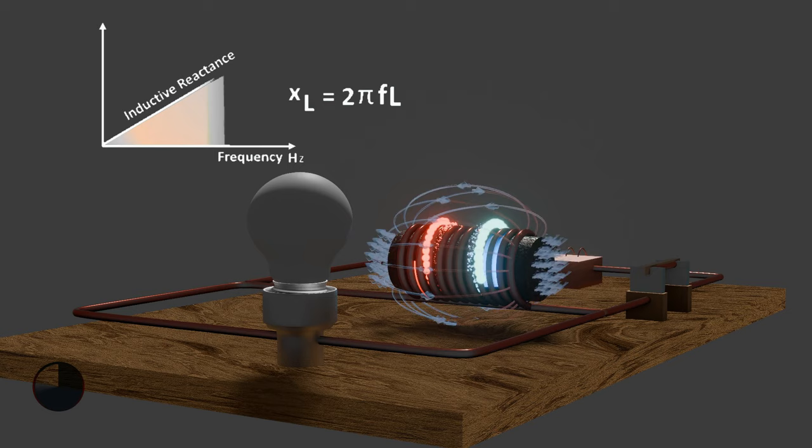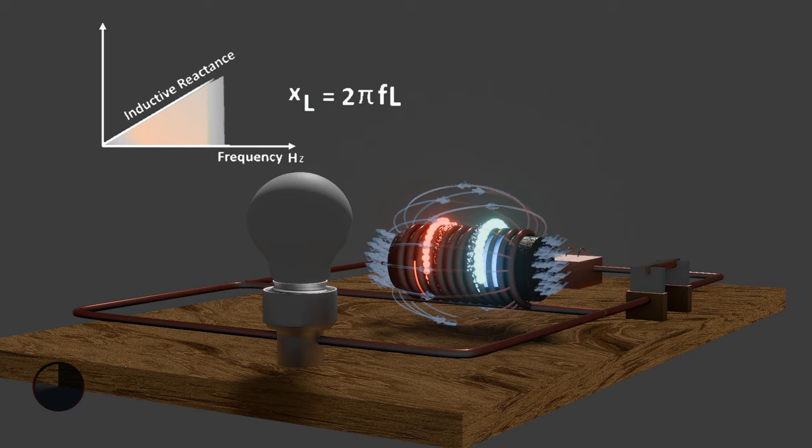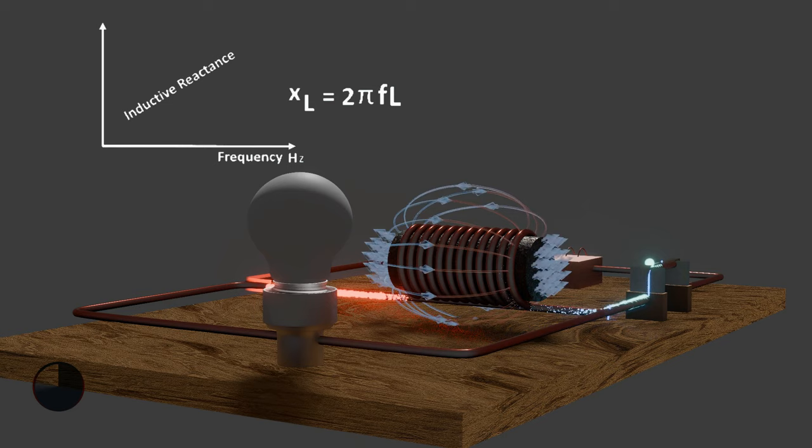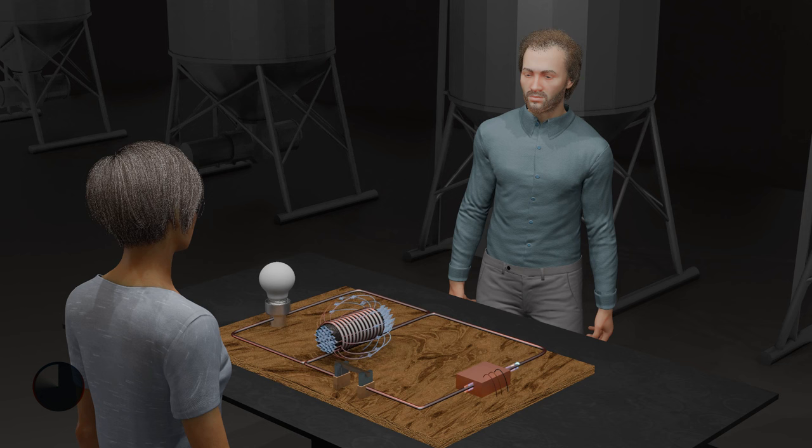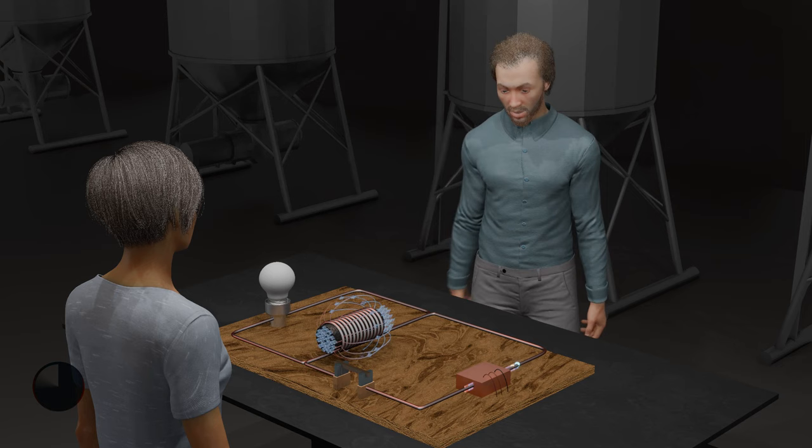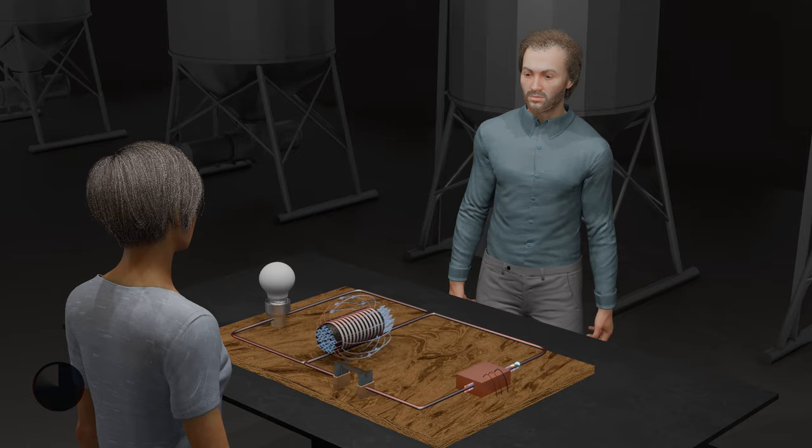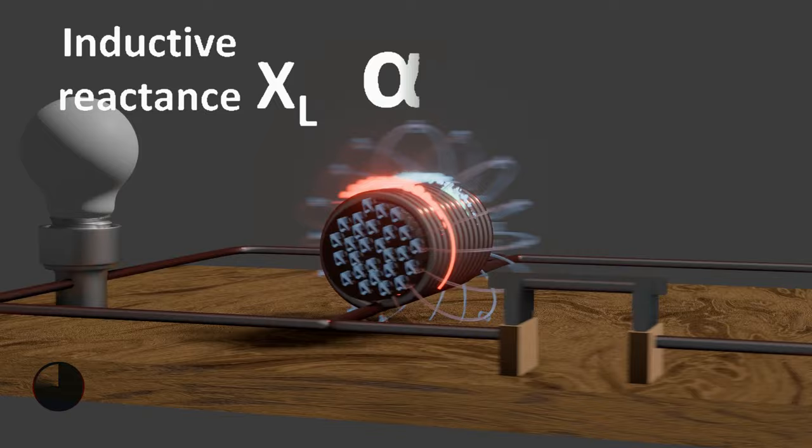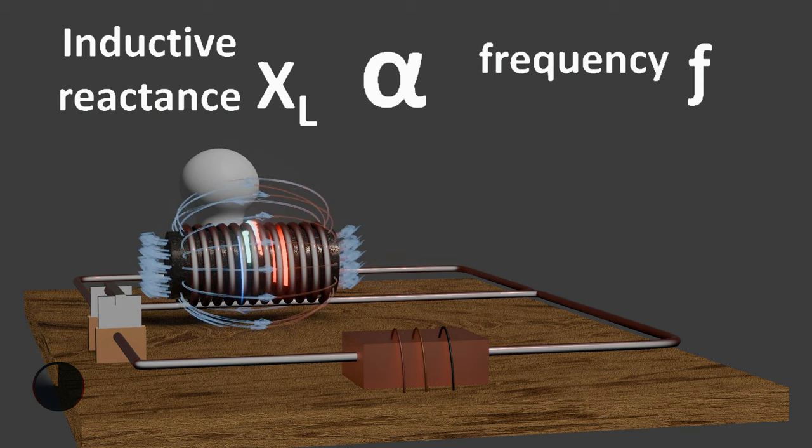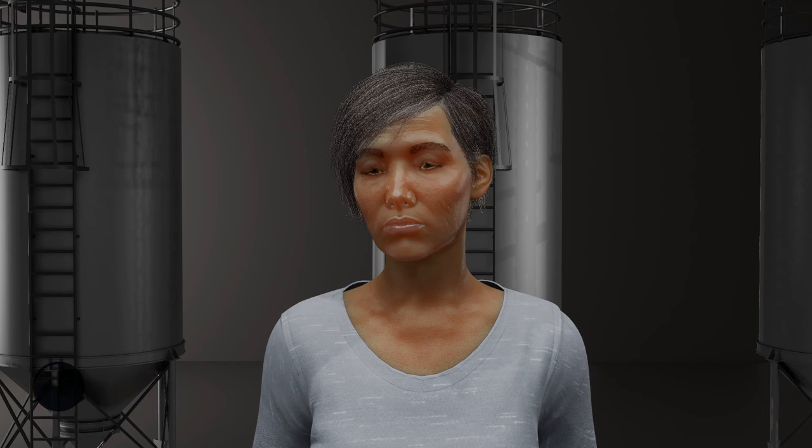However, as the frequency approaches 0 or DC, the inductive reactance decreases to 0, which means the inductor here also acts like a short circuit. So from this behavioral pattern, it means that the inductive reactance is proportional to the frequency. In other words, inductive reactance increases with frequency resulting in inductive reactance being small at low frequencies and inductive reactance being high at high frequencies. And this can be seen in this graph here.